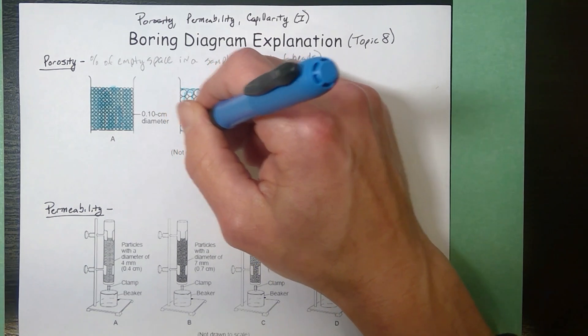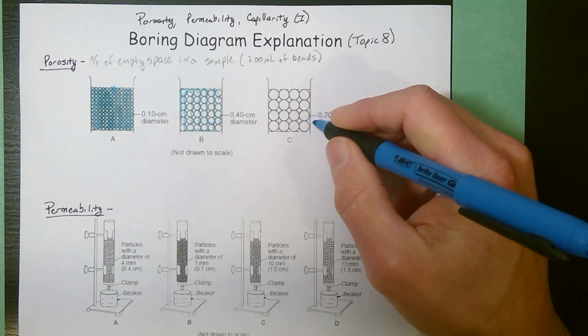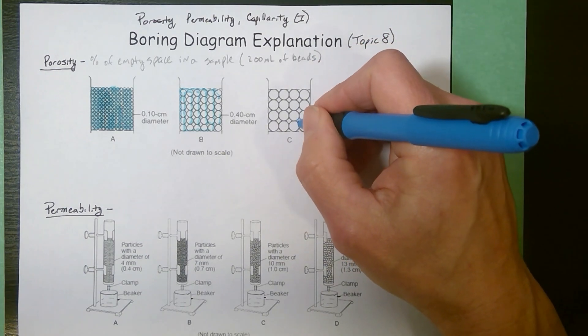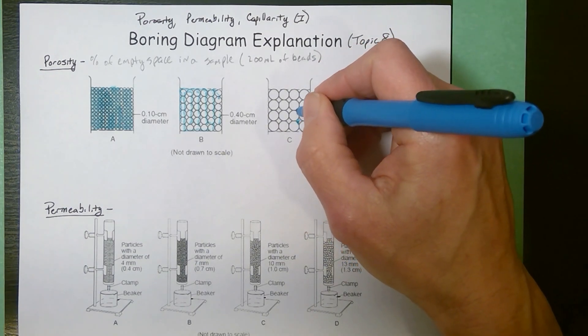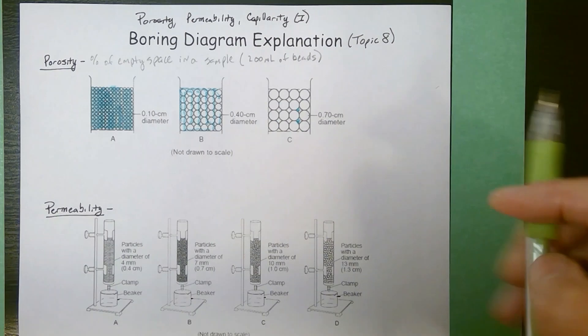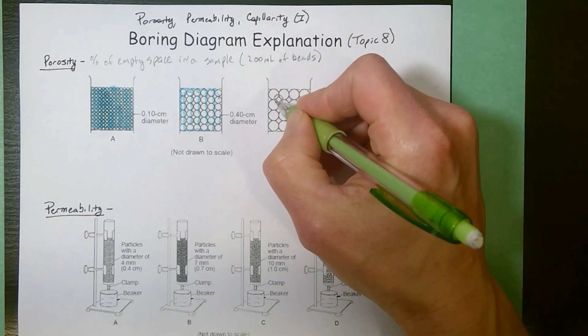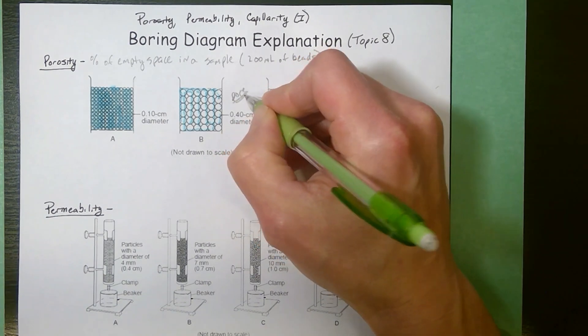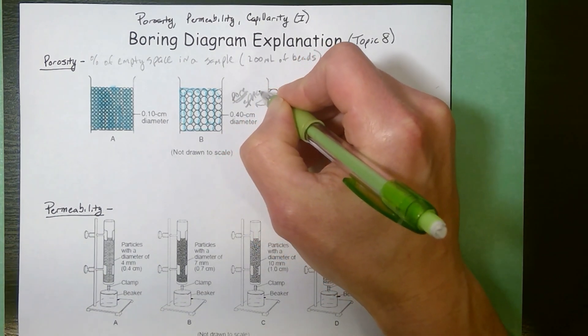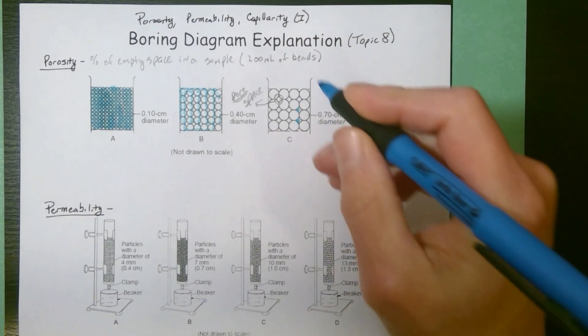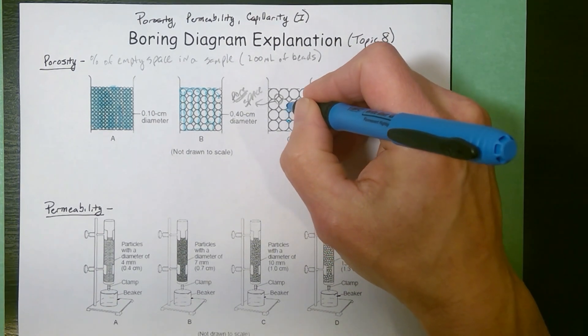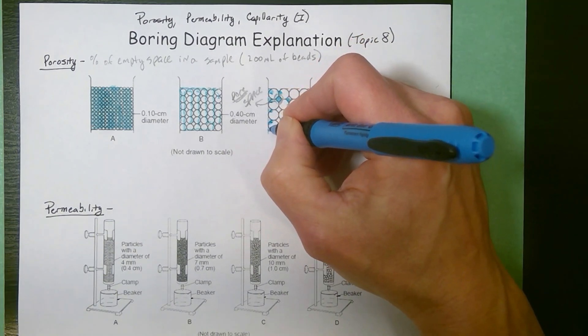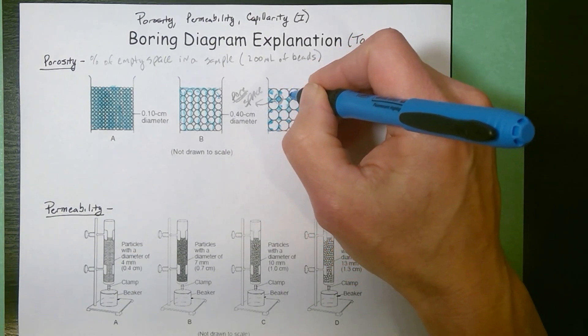When you look at the last sample, this has the largest size beads. These are 0.7 centimeter beads. You've got really big wide open spaces. Each individual space, if I just look at this one, there's one big space there. That space, you call that each individual space a pore, but the largest sample has the biggest pores, but you can also see it's got the fewest pores.